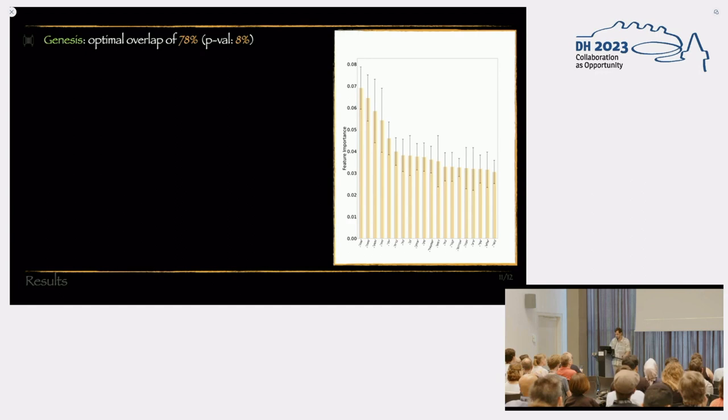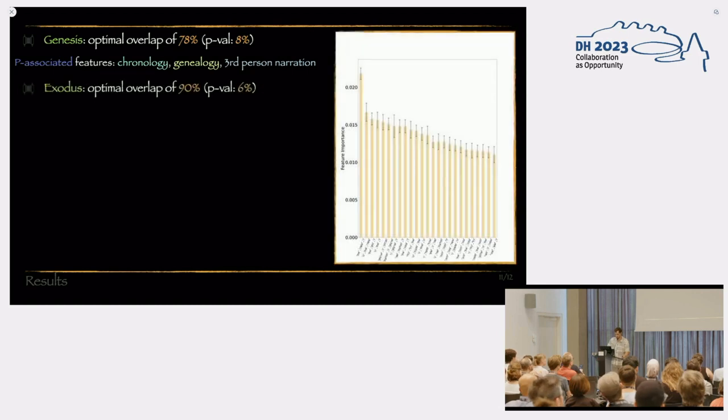Let's look at some results. First of all, for the book of Genesis, we get an optimal overlap of 78%, the p-value of 8%. So it's pretty significant. So we've shown that really the P and non-P signal is the strongest given our analysis. We find P-associated features such as the talk of chronology, genealogy, third-person narration, things that were identified by scholars to be associated with this textual constituent.